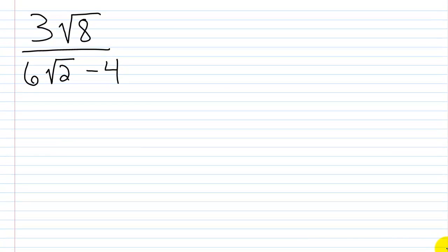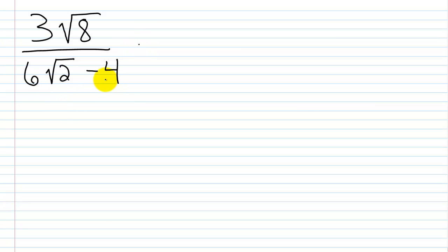What about 3 times the square root of 8 over 6 times the square root of 2 minus 4? So again, we look at this and we want to rid this denominator of radicals. So we multiply by the conjugate of the denominator — numerator and denominator.